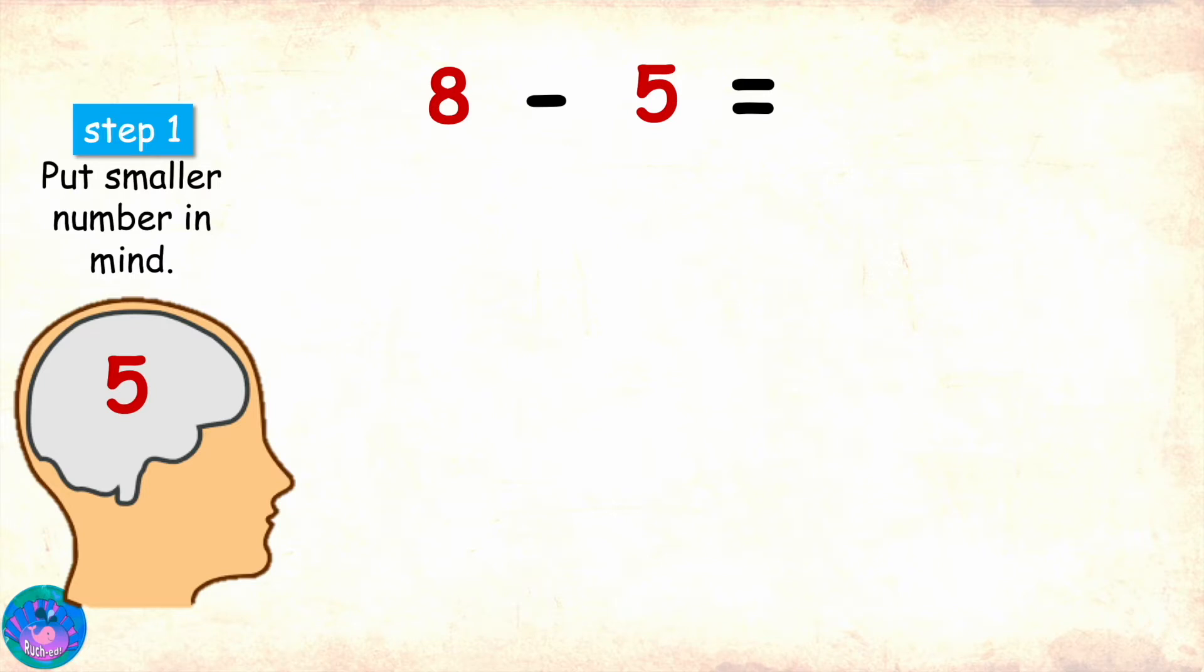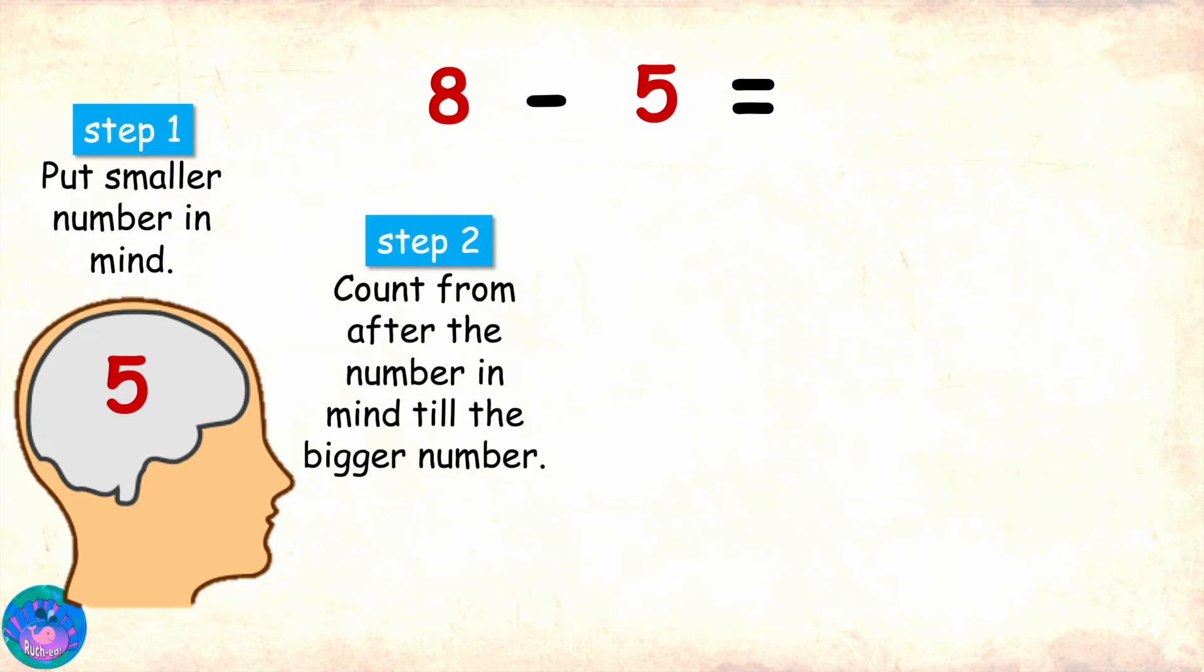Step 2 is to count forward from after the number in mind till the bigger number, and we will be using our fingers for that. The number in mind is 5, so we will start counting from after 5 and count till the bigger number 8.